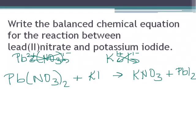If you need to review that, please check the naming videos to see how the crisscross works. We need to balance. We have one lead on our reactant side, one lead on our product side, two nitrates because there's that little two outside the brackets on our reactant side, and only one on our product, so we'll put a two in front.